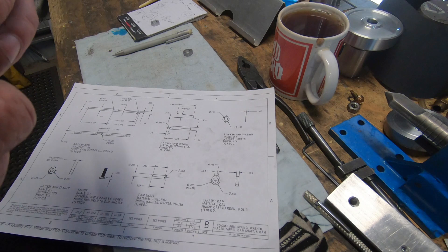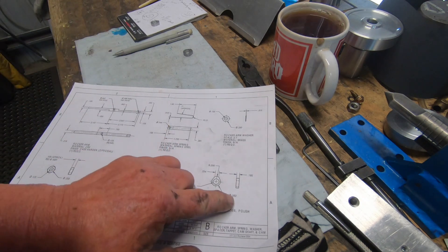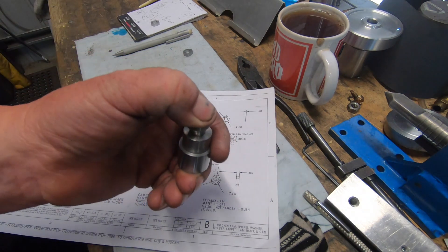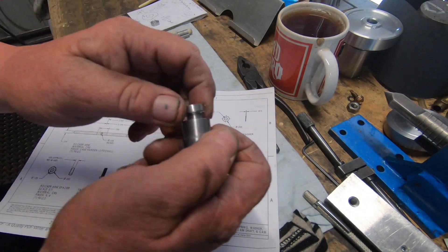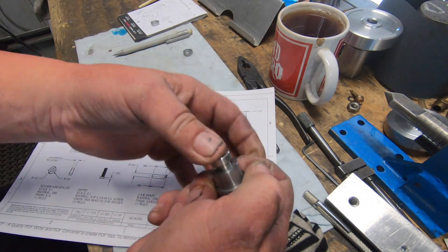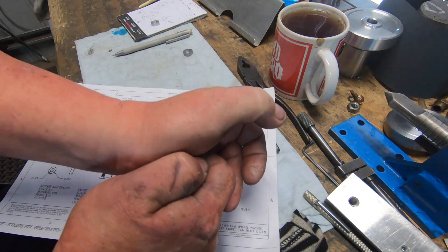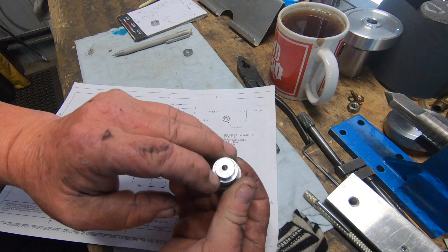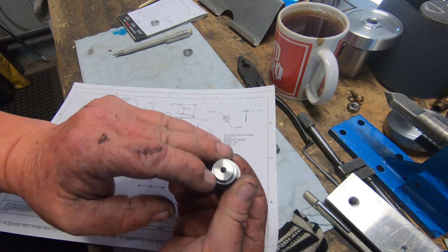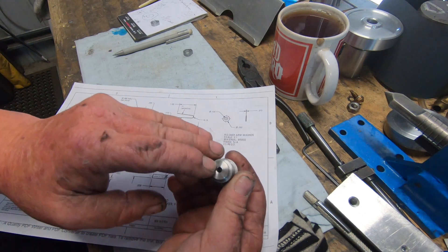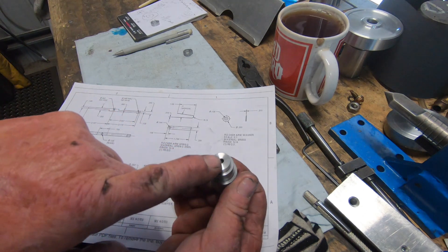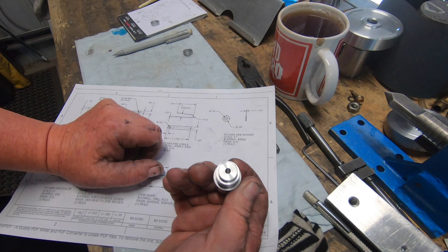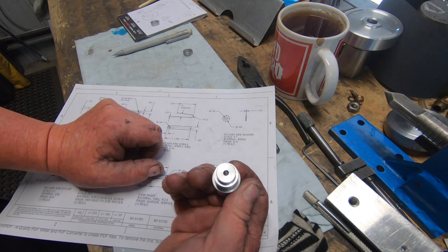I've got the blank here. I've also turned the bung up, which is 562 thou in diameter. So if I get that, it's a tight fit, really good fit.